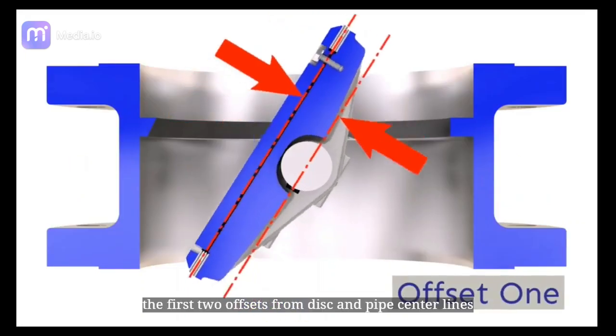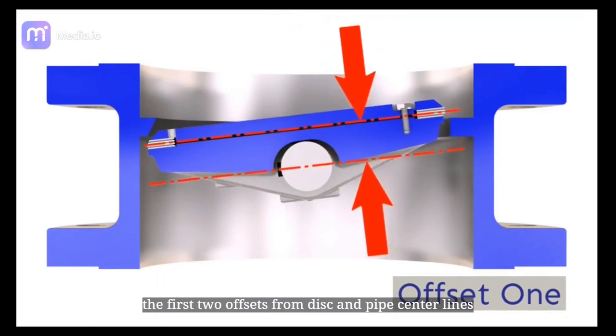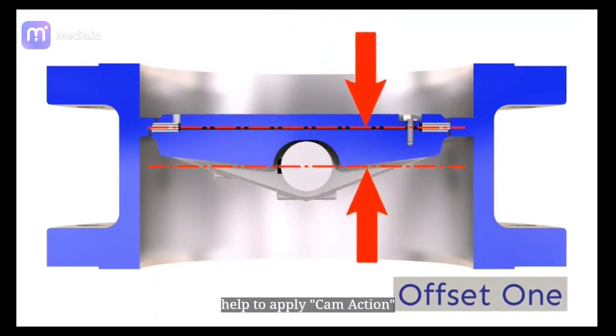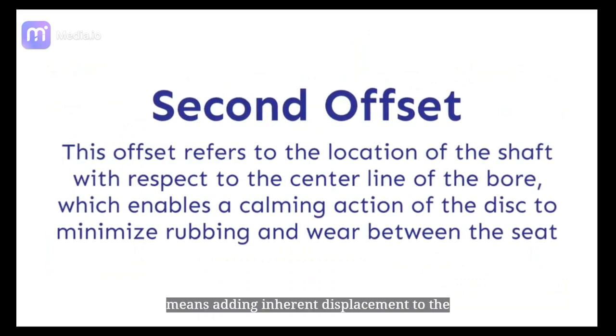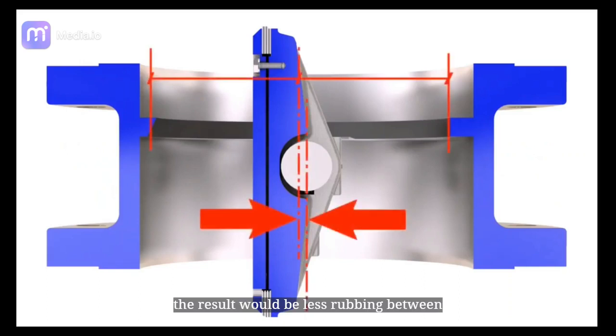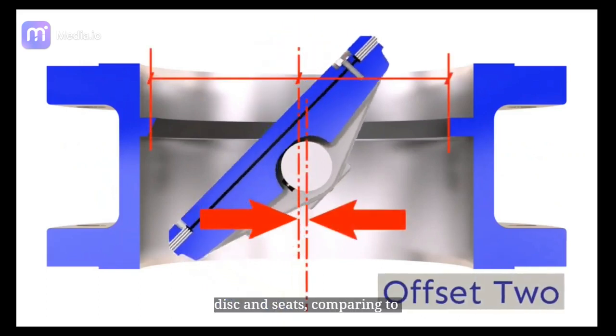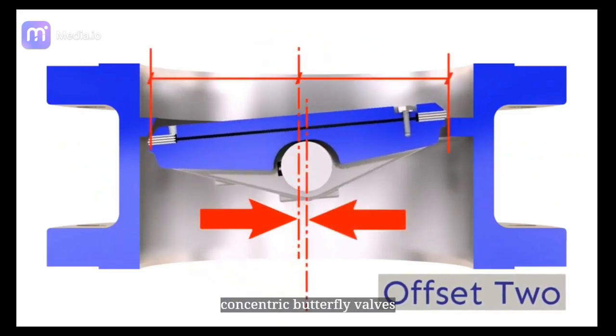The first two offsets from disc and pipe center lines help to apply camming action, meaning adding inherent displacement to the rotational motion. The result would be less rubbing between disc and seats comparing to concentric butterfly valves.